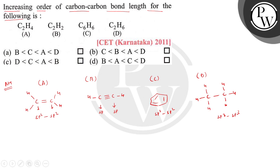So now, as you know, the overlapping due to the sp3 carbons, sp3 carbons have higher bond length than sp2, and then sp. So here D will have the higher bond length.